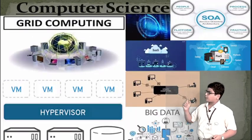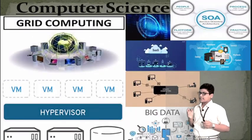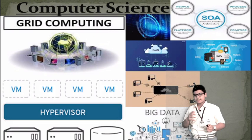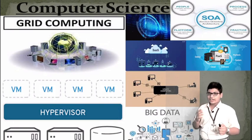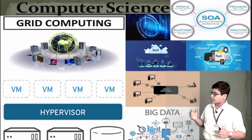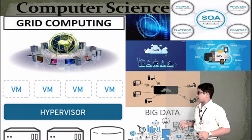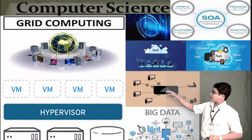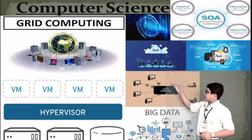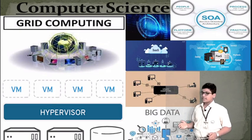Next is our computer science sector. It includes grid computing, service-oriented architecture, platform as a service, software as a service, big data, and utility computing. PaaS and SOA (service-oriented architecture) include practice, process, people, platform, and many more.